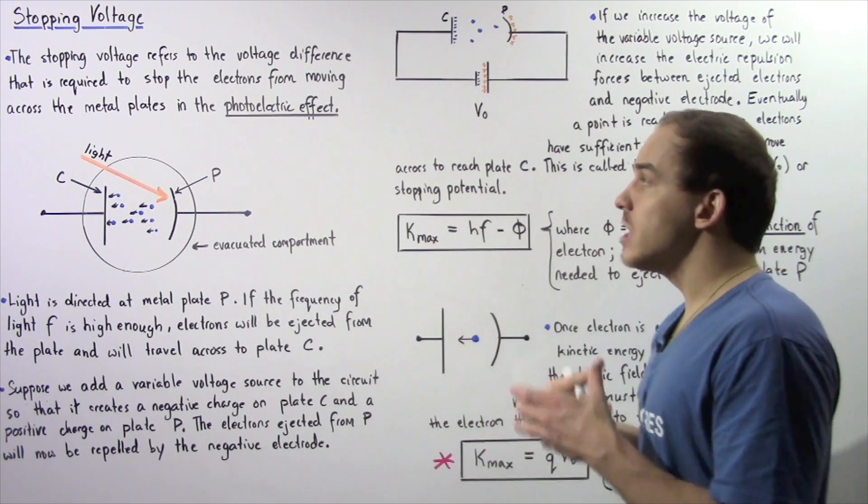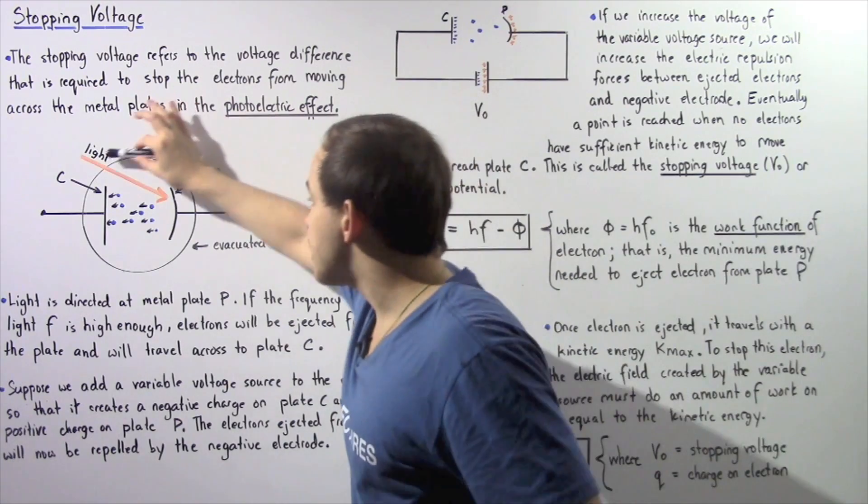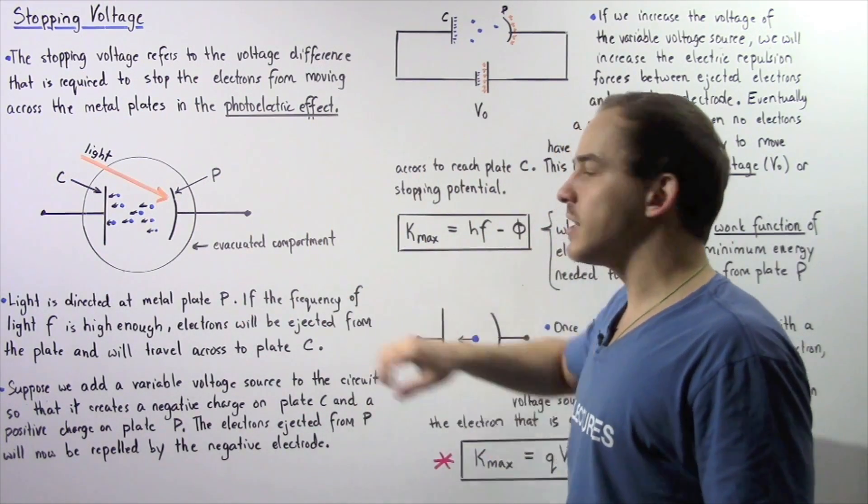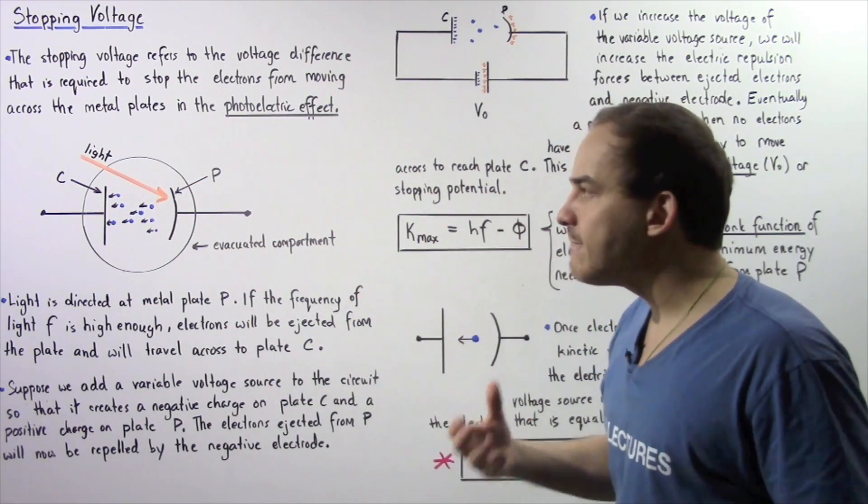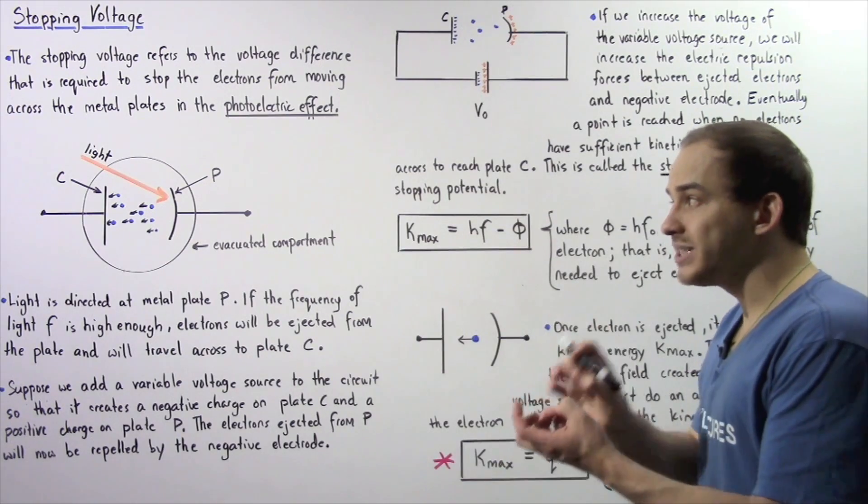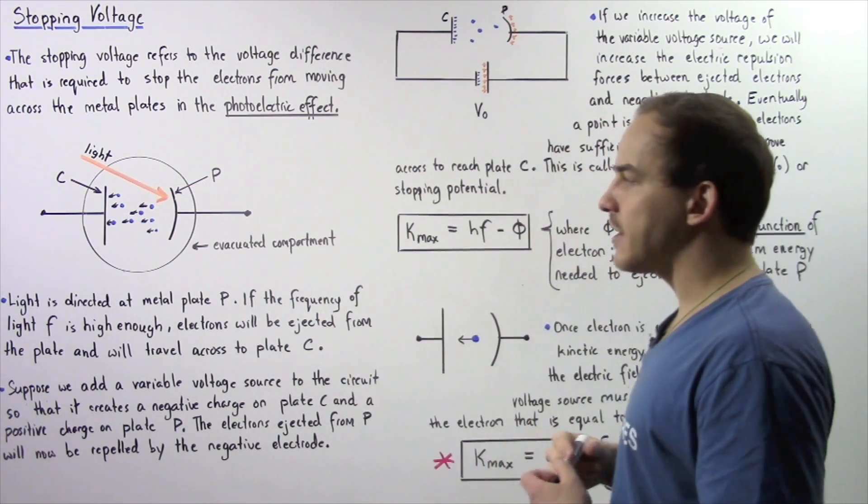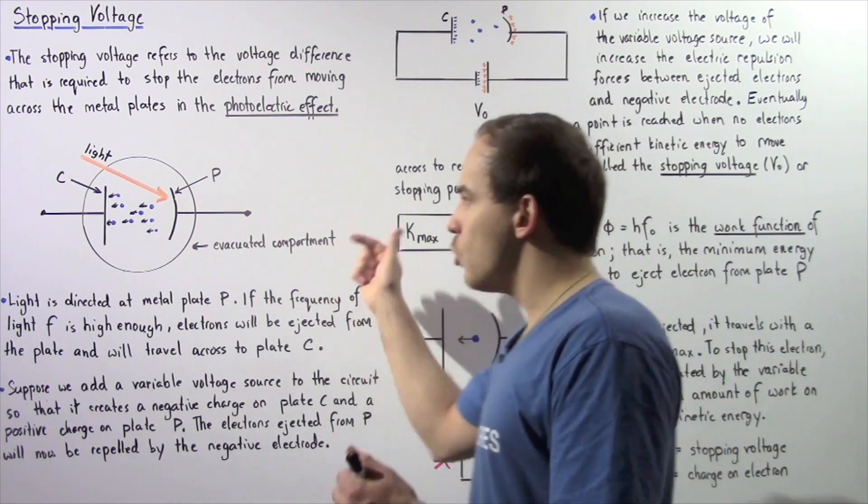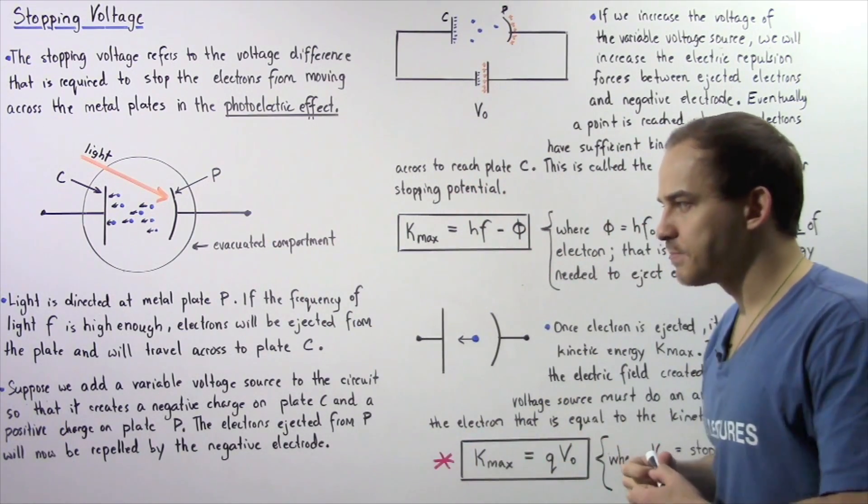And this effect is known as the photoelectric effect. Now, notice this round region is basically the evacuated compartment. So inside this compartment, we don't have any air molecules so that no collisions take place between the electrons and the air molecules. Basically, the electrons are allowed to move straight across between the following two metal plates.